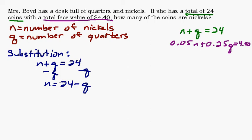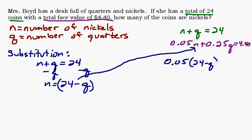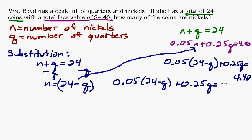We got our n equals 24 minus q. Here comes the substitution. We're going to take this n and we're going to substitute it into the other equation. So instead of writing n times 0.05, we're going to take 24 minus q. So I'll bring down the 0.05. Now instead of writing n, I'm going to write 24 minus q. So now what we've created is an equation with only one variable, which is your q. And we'll go ahead and finish it here. We're going to distribute.